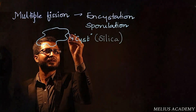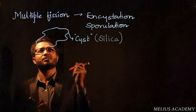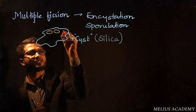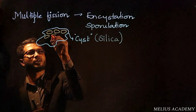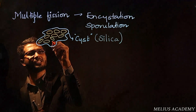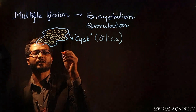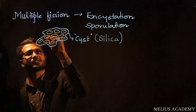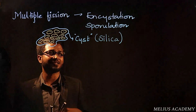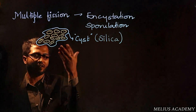Once the cyst wall layer develops, the organism is going to form many nuclei and many cellular structures within its body. Since the cyst is protecting them, they are all safe within the body and each has a single nucleus. So encestation is the process where a cyst develops around the body of an organism.